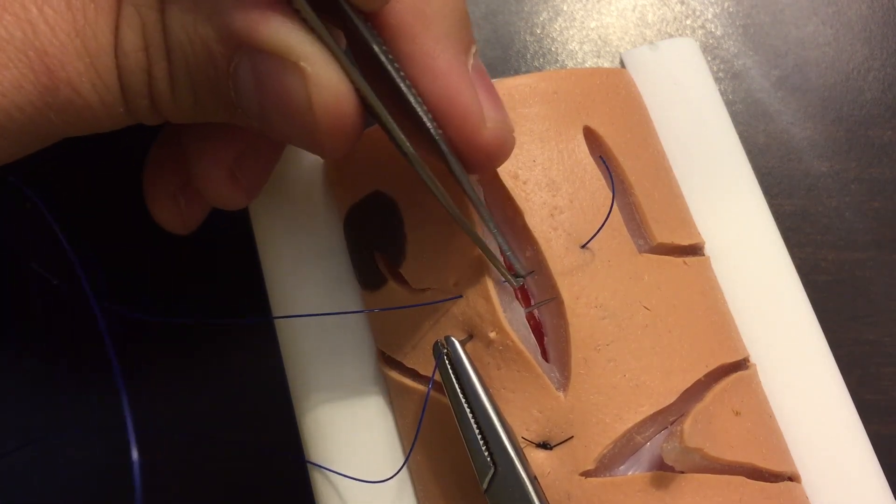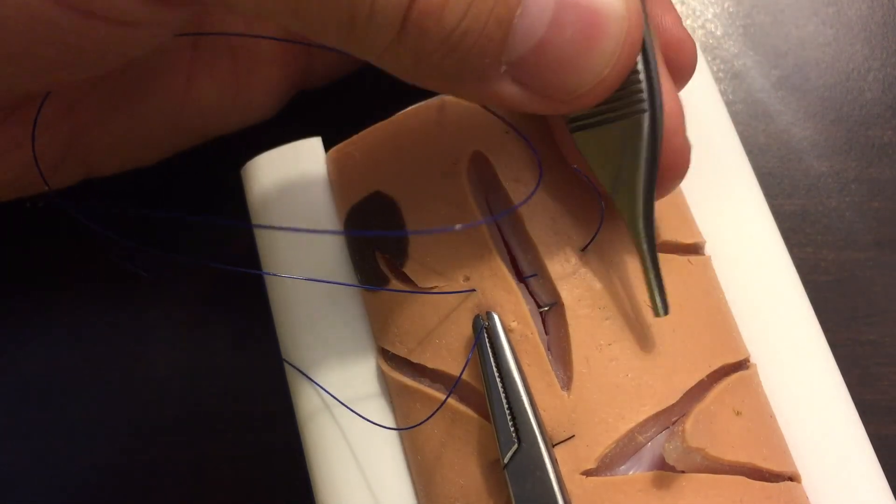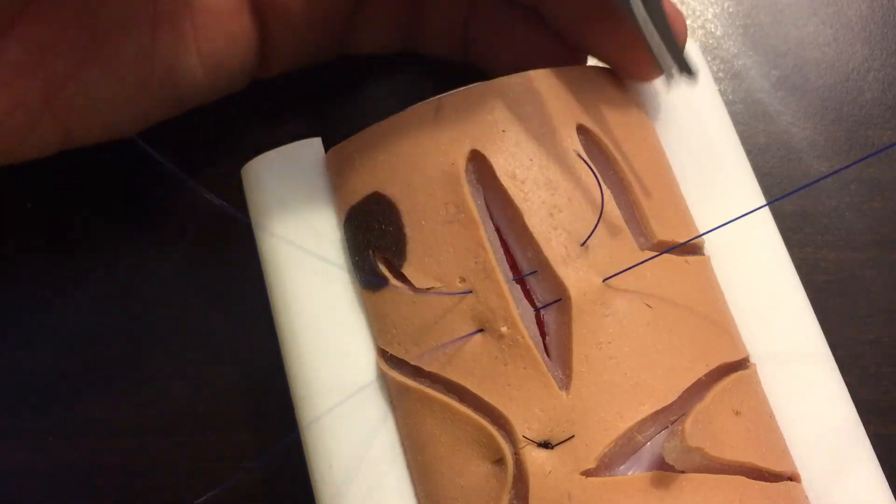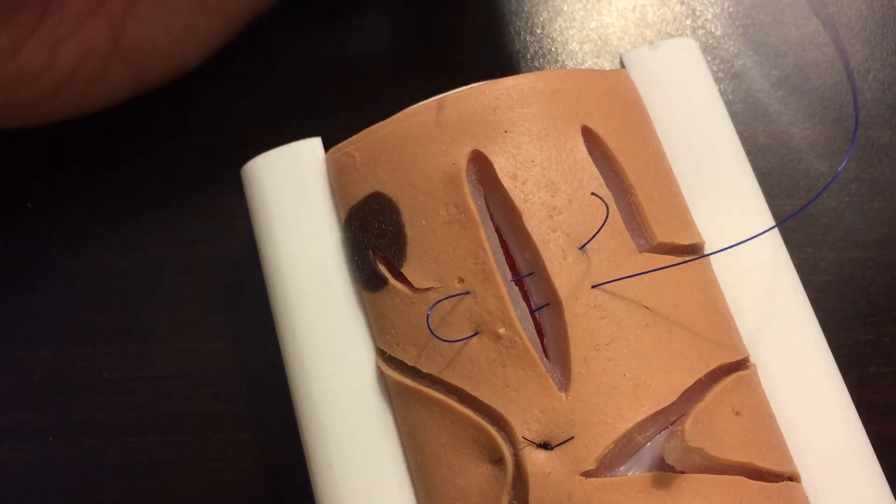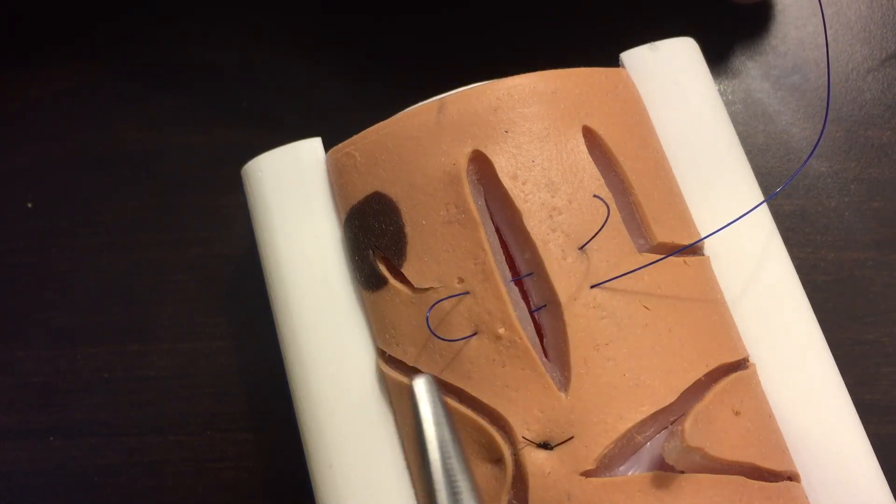We're going to make sure that our next pass is the same depth as our first pass. Then you're going to exit the skin at 90 degrees.